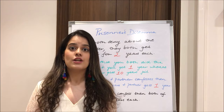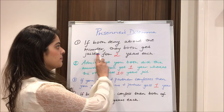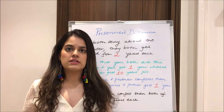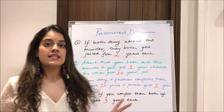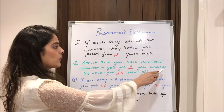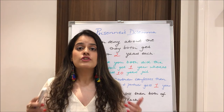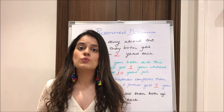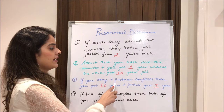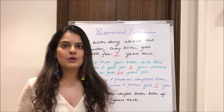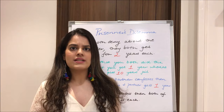The police gives them a few choices. First, if both of you deny the murder, you both get jailed for two years each — imprisoned for drug selling. Second, if you admit you both committed the murder, you get one year while the other gets ten years. So if you confess, you get a reduced sentence of one year, while your partner who did not cooperate gets ten years. Third, if you deny and your partner confesses, you get ten years and your partner gets one year.